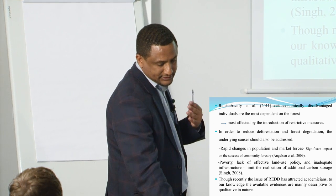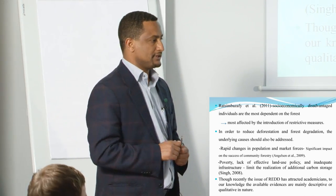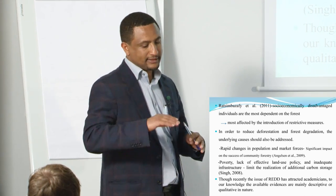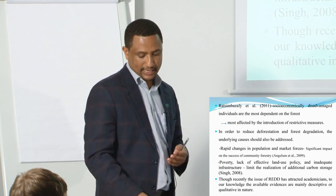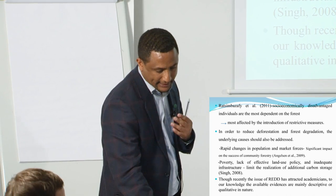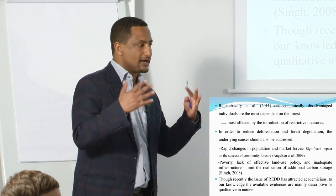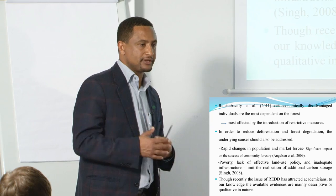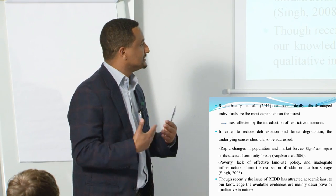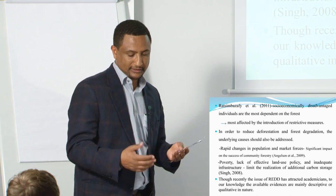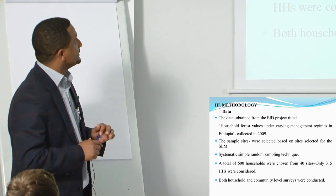In order to reduce deforestation and forest degradation, in addition to micro-level factors, macro-level underlying causes should be stressed — like population, poverty, and land use rights. Though recently the issue of REDD has attracted academics and there is a growing empirical literature, to our knowledge the available evidence is mainly descriptive and largely qualitative in nature. Our aim is to add to the limited literature on REDD and forest management.